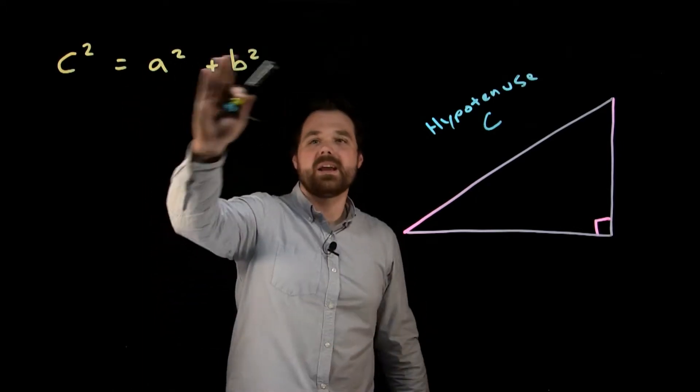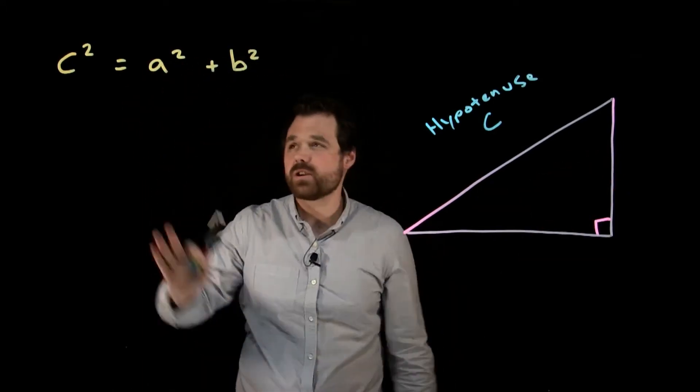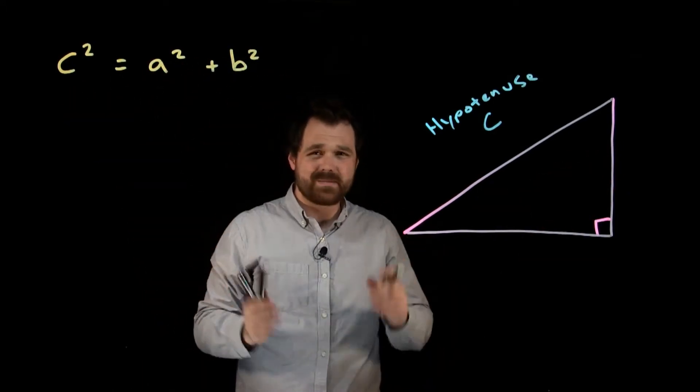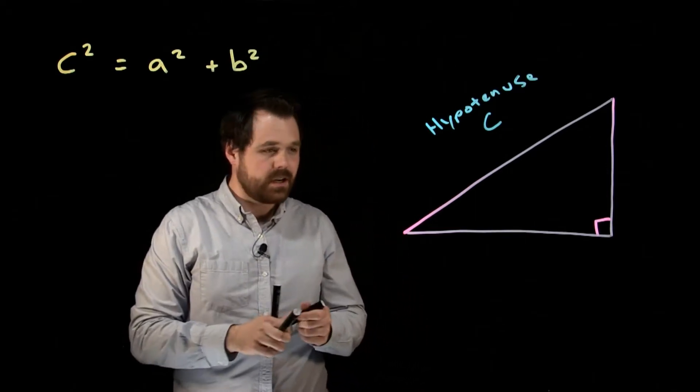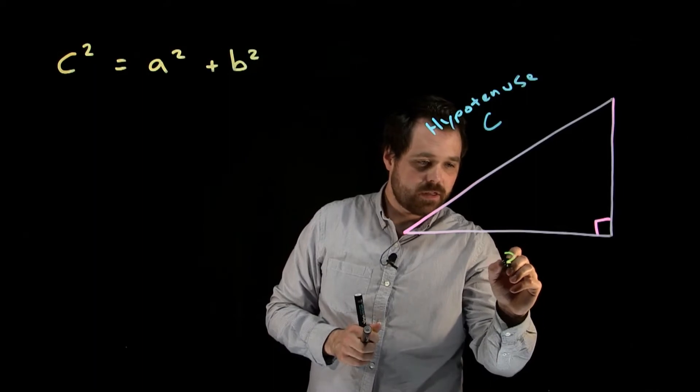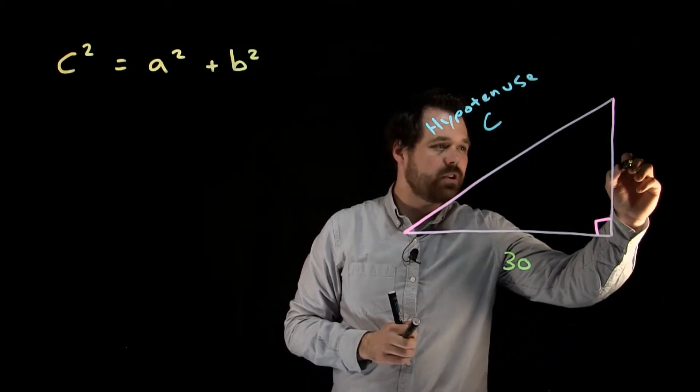Now because we're adding A and B, it doesn't matter which one is which. C, however, always has to be the hypotenuse. So in this case, we're going to say that this down here is 30 and this over here is 40.